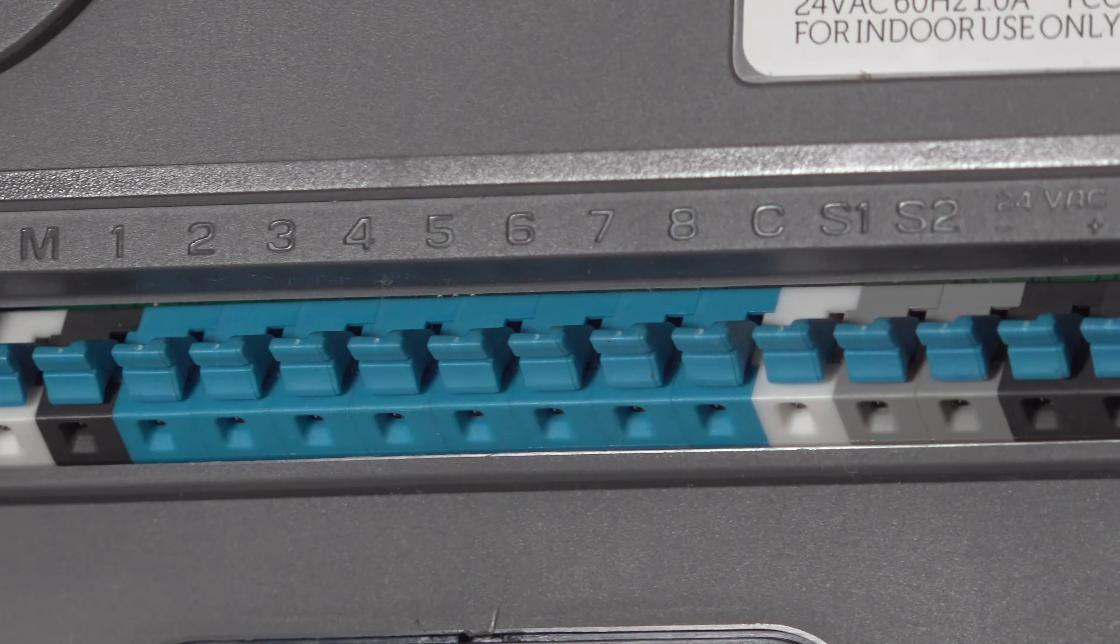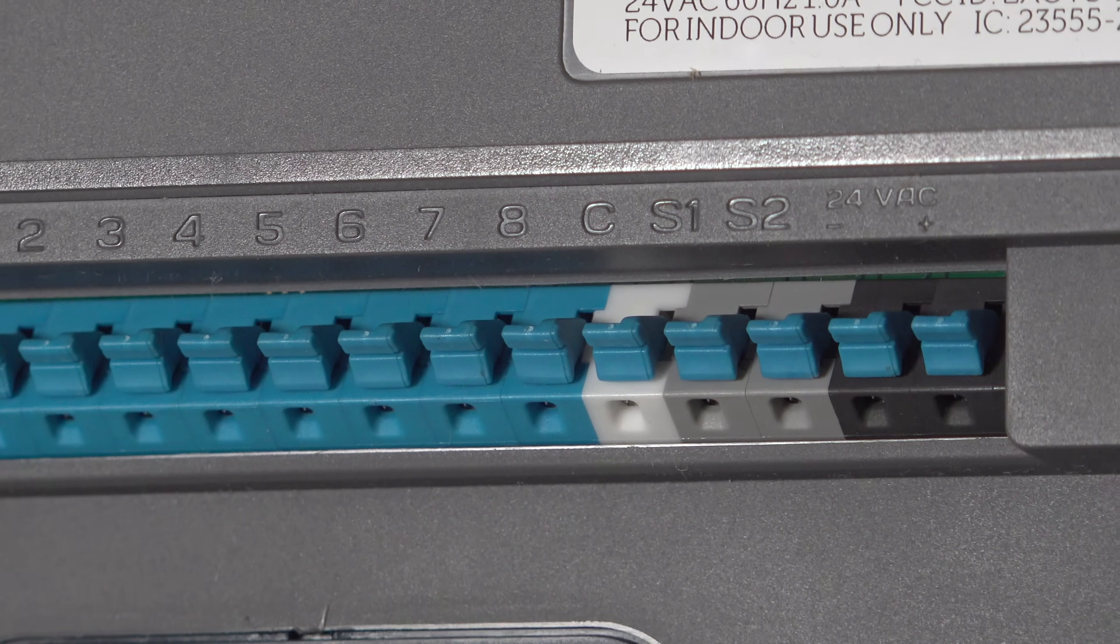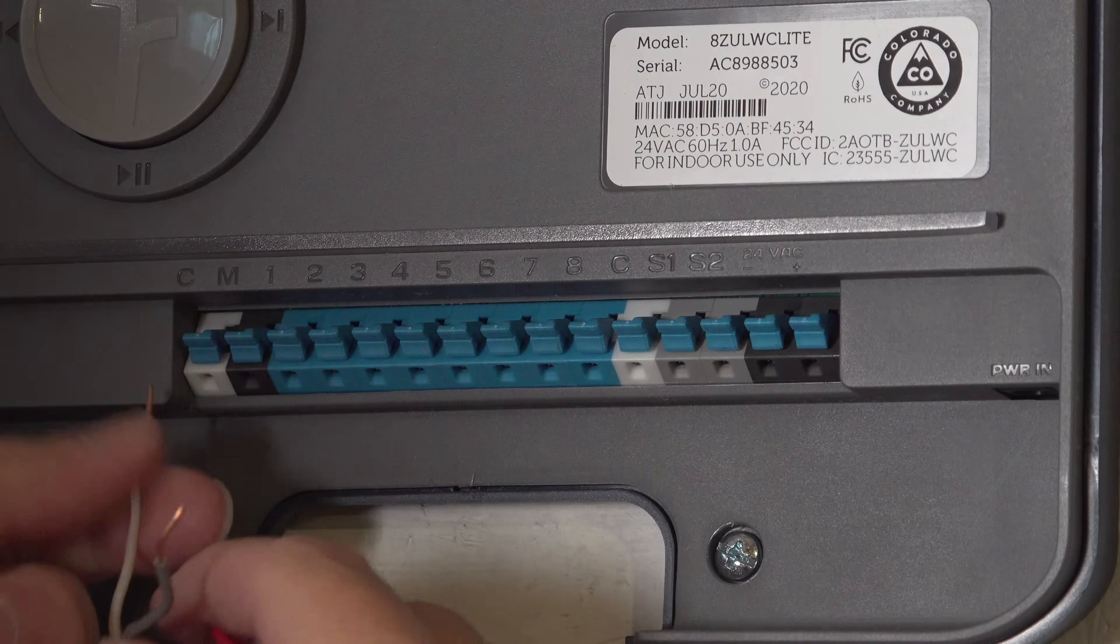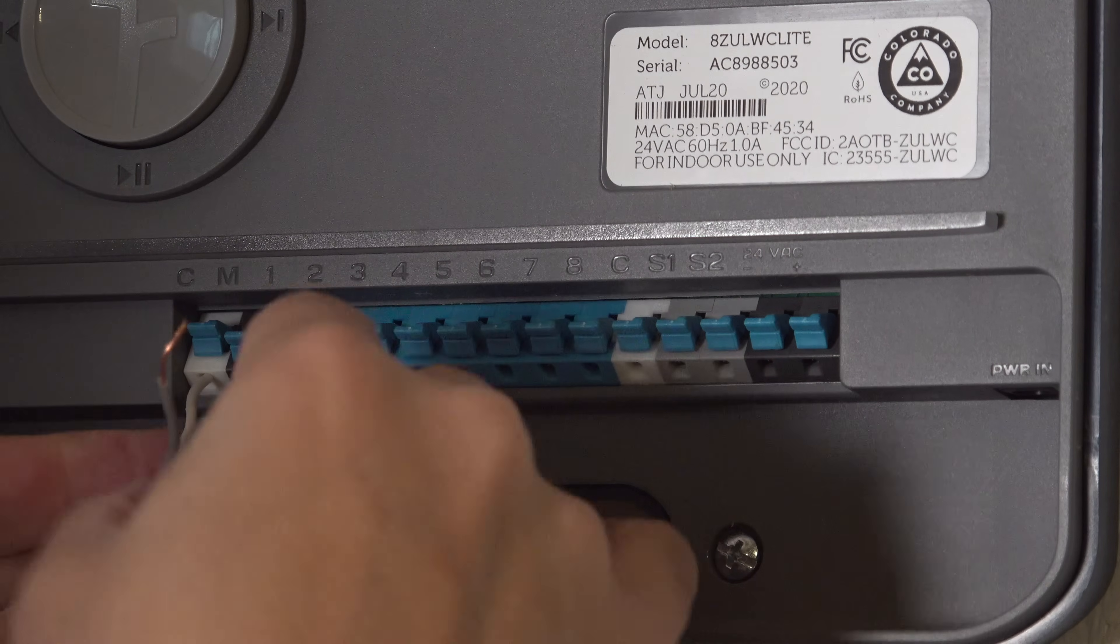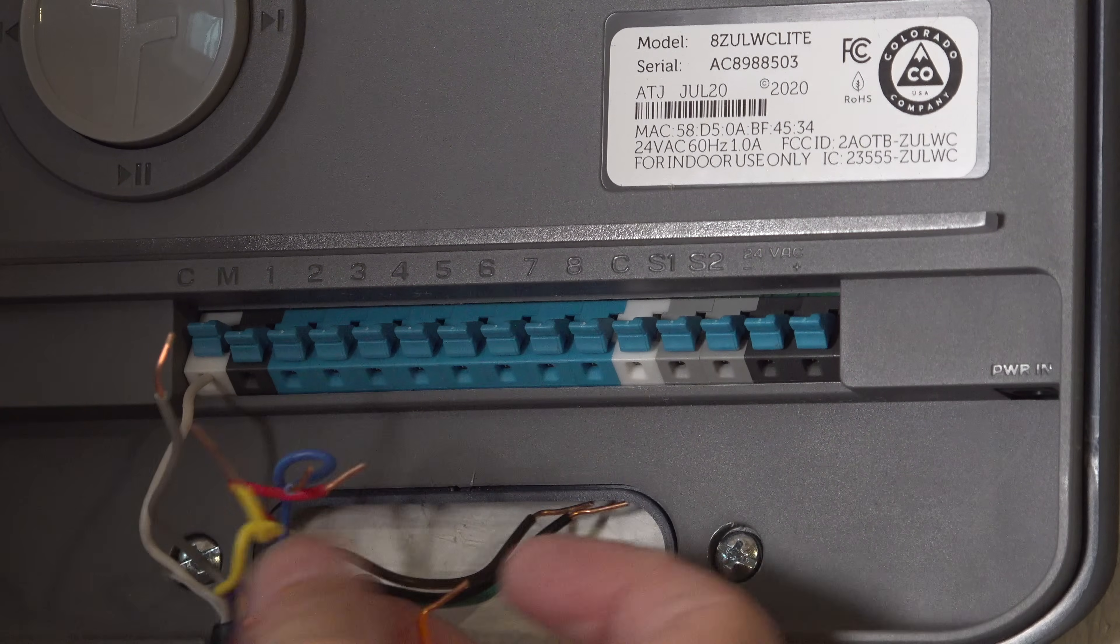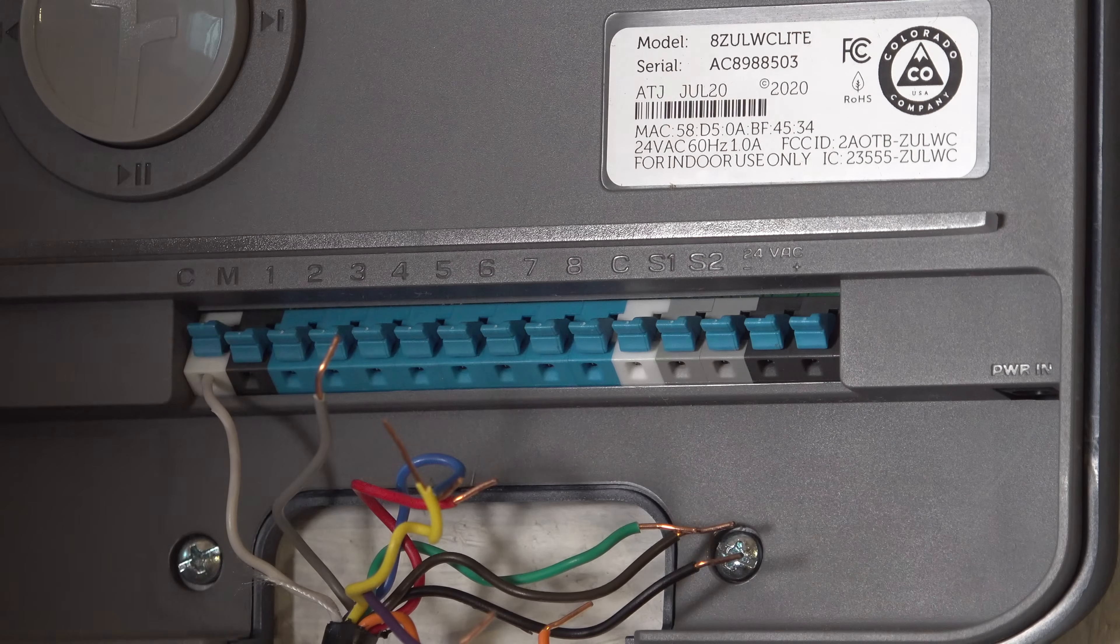Now we need to rewire our new unit but this is even easier because you'll notice there's no screw terminals. You just take the wires and push them right into those connectors. They lock in position and they can't be pulled out unless you push up on the tab.